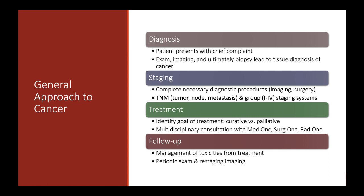Once we have the TNM staging — which is specific to each type of cancer — we can translate that into a more generalized group staging system ranging from one to four, which is a good indicator of how advanced the cancer is. Generally, stage one and two cancers are usually early stage, stage three is locally advanced and usually involves lymph nodes, and stage four is typically metastatic, having spread to other organs, and is not considered curable. It's really important to get the correct diagnosis and staging so we can start to talk about what type of treatment to offer.